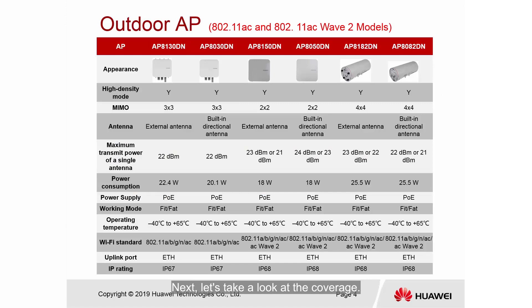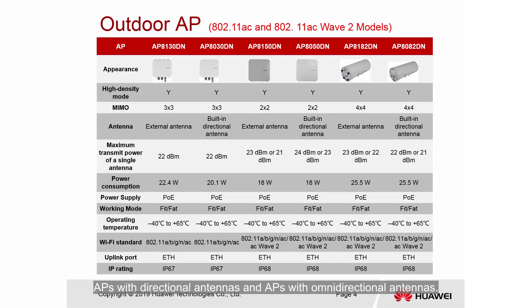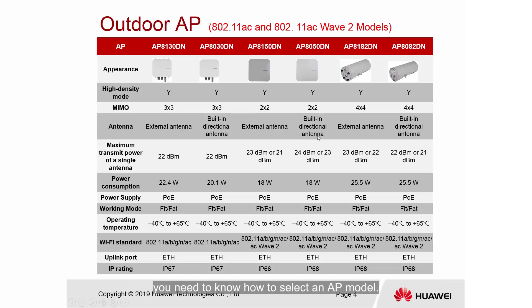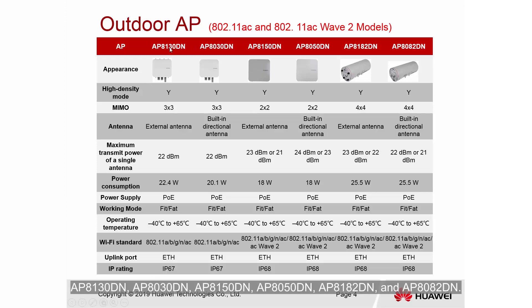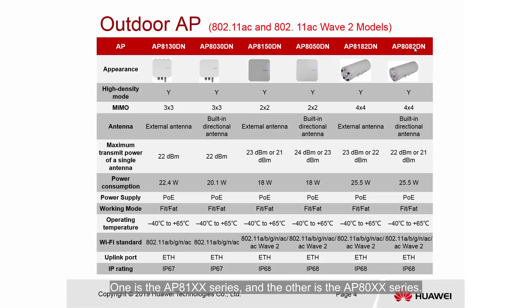Next, let's look at coverage. In outdoor areas, two types of APs are available: APs with directional antennas and APs with omnidirectional antennas. Before determining the coverage distance of a single AP, you need to know how to select an AP model. There are six common outdoor APs: AP 8130DN, AP 8030DN, AP 8150DN, AP 8050DN, AP 8182DN, and AP 8082DN — every two of them form a group: the AP 81 series and the AP 80 series.